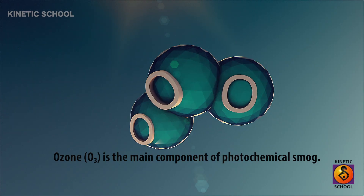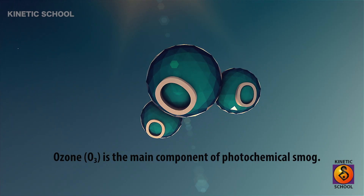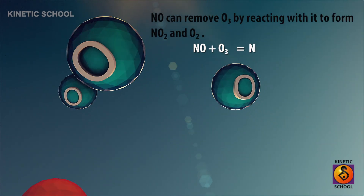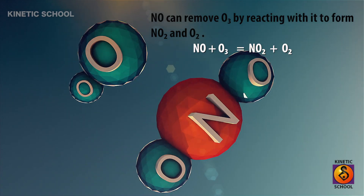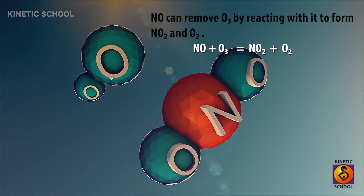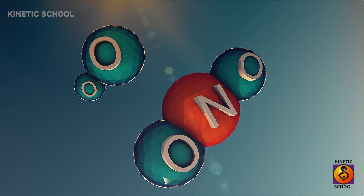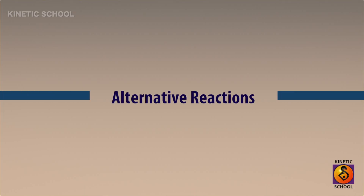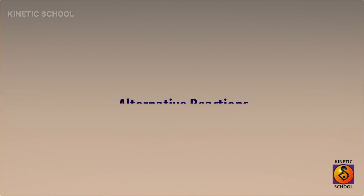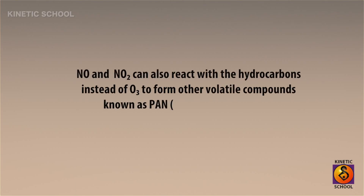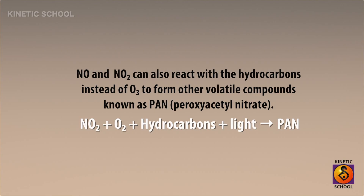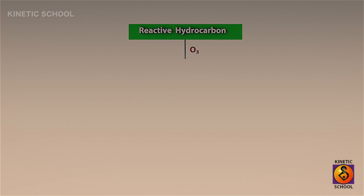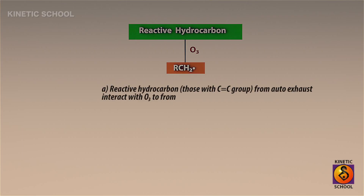Ozone is the main component of photochemical smog. Nitric oxide can remove ozone by reacting with it to form nitrogen dioxide and oxygen. Nitric oxide and nitrogen dioxide can also react with hydrocarbons instead of ozone to form other volatile compounds known as PAN, which means peroxyacyl nitrate.